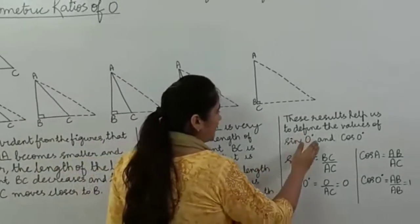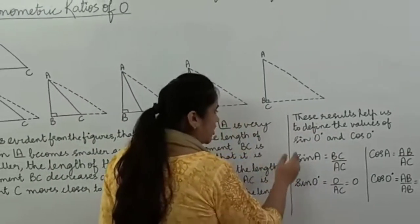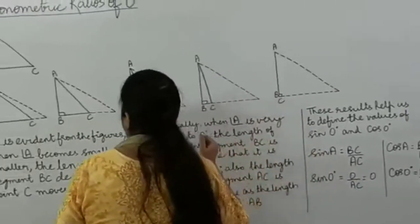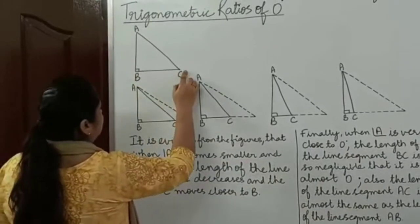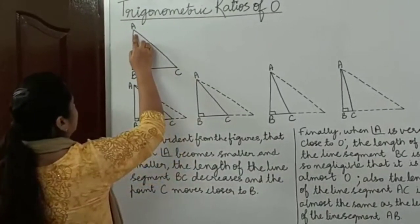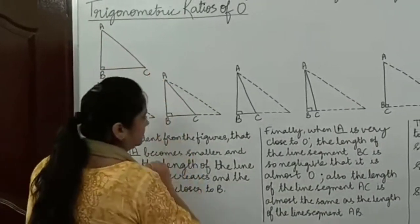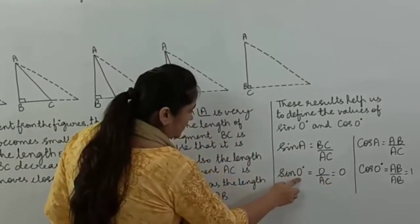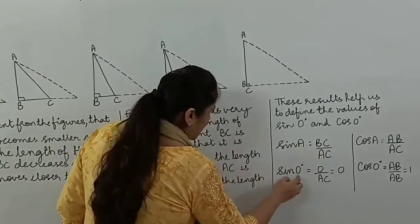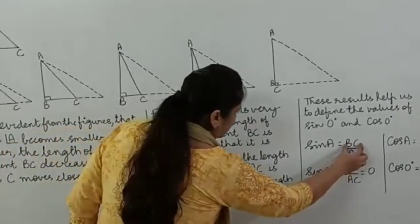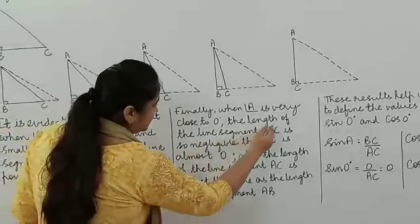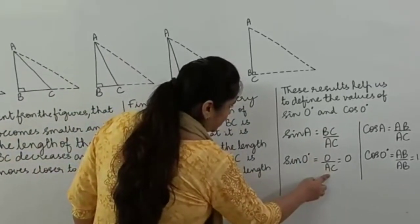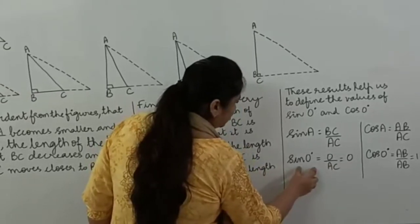These results will help us define the values of sine 0 degrees and cosine 0 degrees. Sine A is the side opposite to angle A, which is BC, over the hypotenuse AC. So sine A equals BC by AC. When A is almost 0 degrees, BC is so negligible that it is almost 0, giving us 0 by AC, which is 0. So sine 0 degrees is equal to 0.